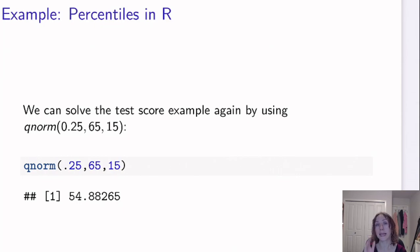So pnorm, here's the x or z, what's the area to the left? qnorm, here's the area to the left, what is the x or z value? And that is going to be how we are using R to solve for probabilities in this second unit.